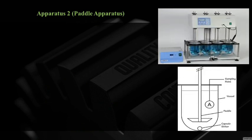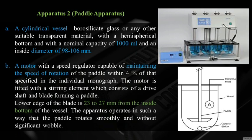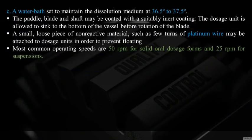Apparatus 2 — Paddle Apparatus: similar cylindrical vessel with capacity 1000 mL and internal diameter 98 to 106 mm. Speed of rotation maintained within 4% of the specified value. The motor is fitted with a driven shaft and blade forming a paddle. The lower edge of the blade is 23 to 27 mm from the inside bottom of the vessel. The apparatus operates so the paddle rotates smoothly without significant wobble.